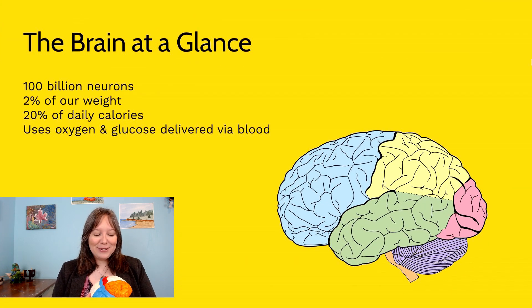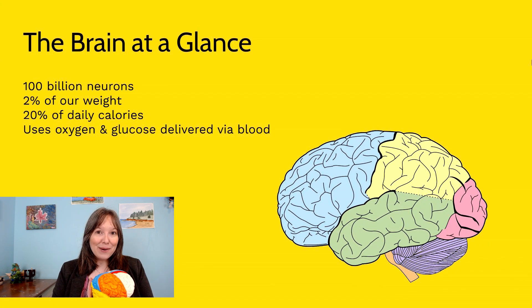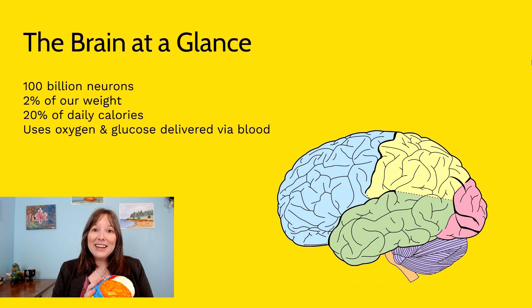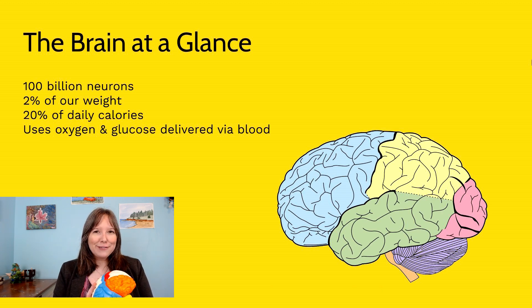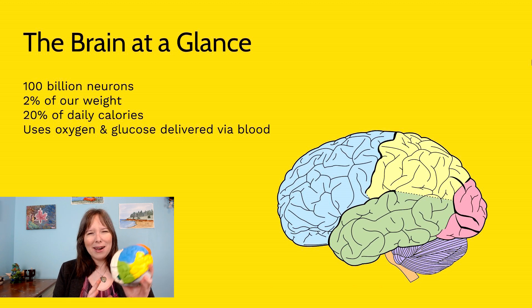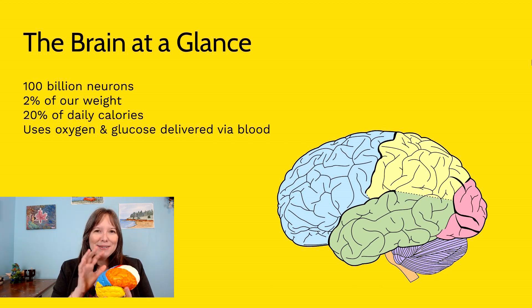The average human brain includes an estimated 100 billion neurons. We just spent a lot of time focusing on what one neuron looks like. I can't imagine a hundred billion neurons in this brain.